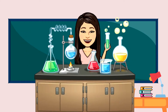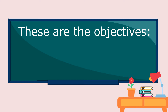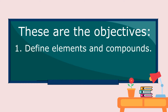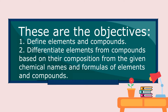So let us proceed to our next lesson. These are our objectives. 1. Define elements and compounds. 2. Differentiate elements from compounds based on their composition from the given chemical names and formulas of elements and compounds.